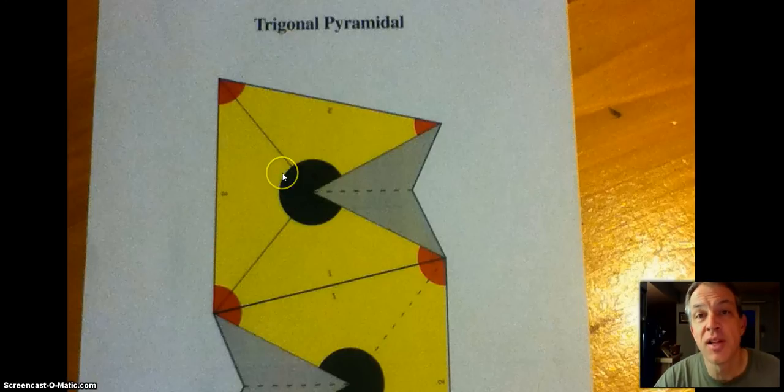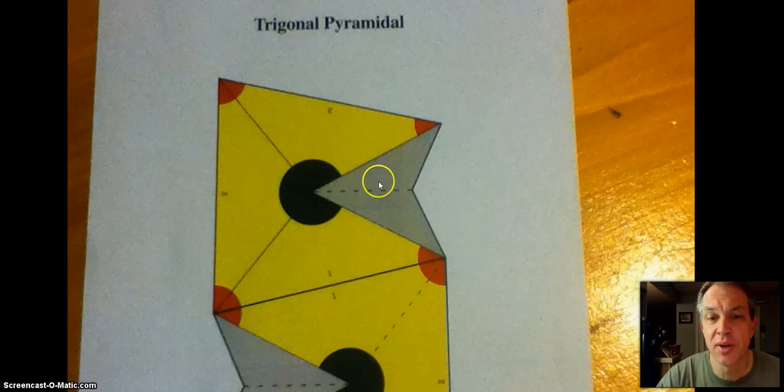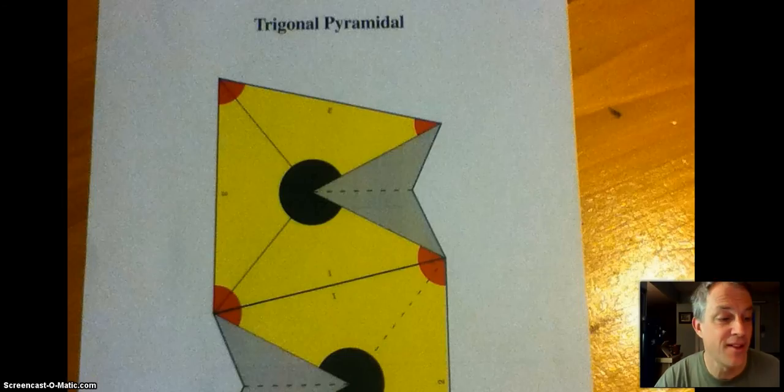Any place you see a solid line with the yellow, that means it's a mountain fold. The gray is going to get folded back, and this part right here, this dotted line, that's going to be a valley fold. We'll do it so we don't see the gray.